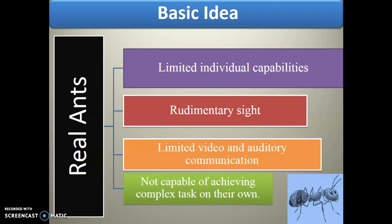Ants have some special qualities. If we talk about real ants, they have four key things. First, they have very limited individual capabilities — individually they almost cannot do anything. They are very small species. Second, they have rudimentary sight — most ants cannot see at all or have very limited vision. Third, they have limited visual and auditory communication — they cannot talk and they cannot listen. Fourth, they are not capable of achieving complex tasks on their own.